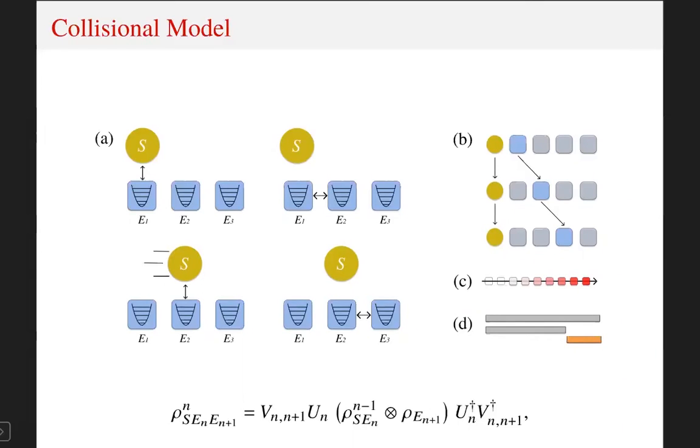Then, we can think of the evolution as a map that takes the system and unit at step n, and gives the system and the unit at the next step, so that effectively, we are only using a subspace of the whole Hilbert space.